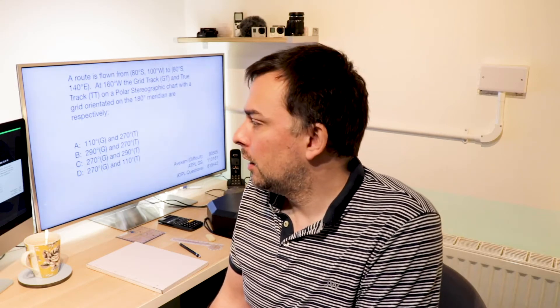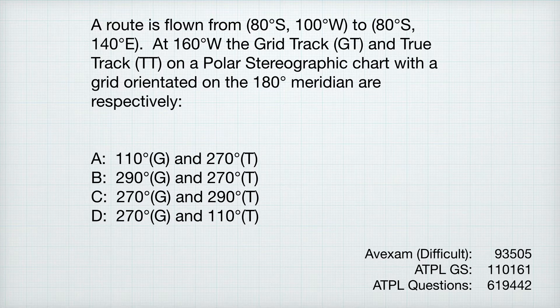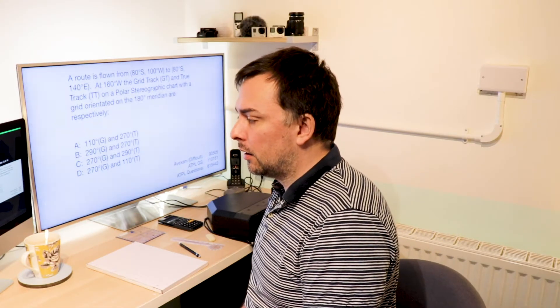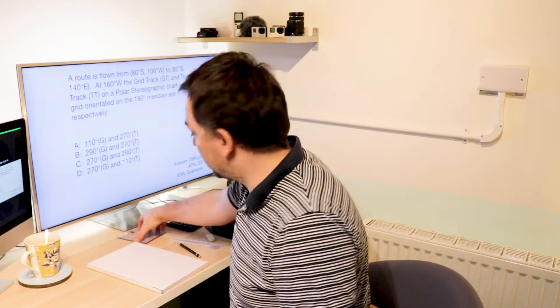Here's another couple of questions — two more, both taken from what AVEXAM classes as their difficult questions. A route is flown from 80 degrees south, 100 degrees west to 80 degrees south, 140 degrees east. At 160 degrees west, the grid track and true track on a polar stereographic chart with a grid orientated on the 180 meridian are respectively what? So this question is asking us to give two answers: a grid track and a true track. Let's set up the page.